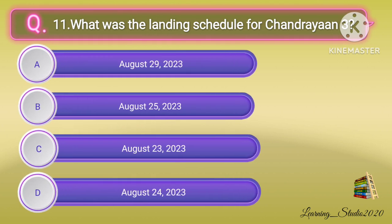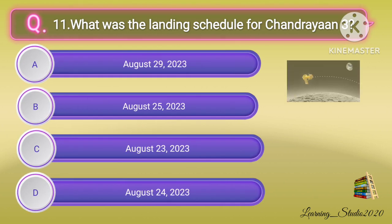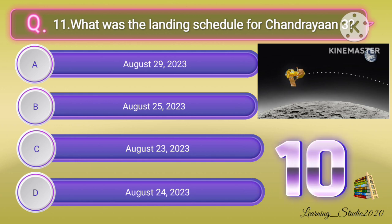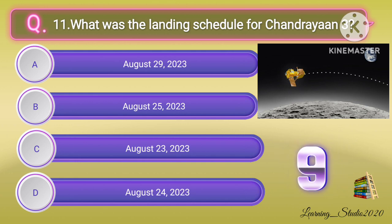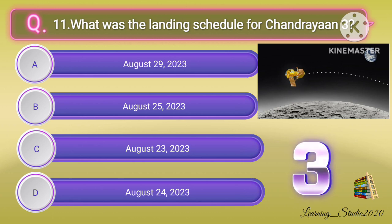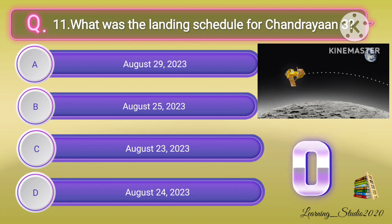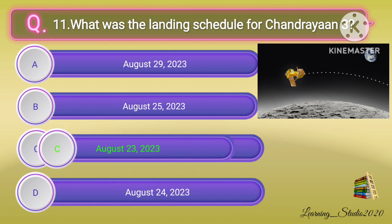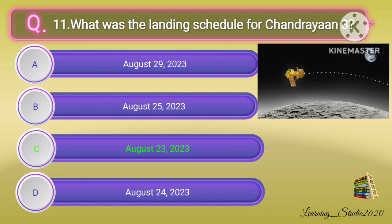What was the landing date scheduled for Chandrayaan 3? Correct answer: option C, August 23, 2023.